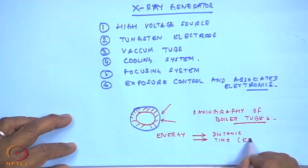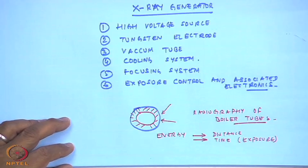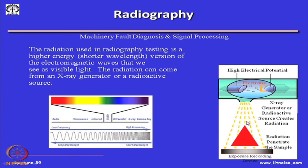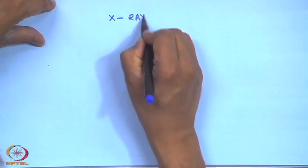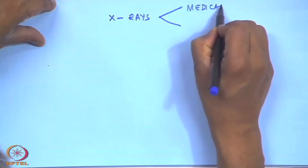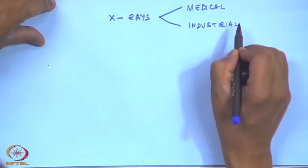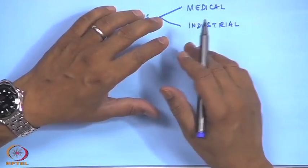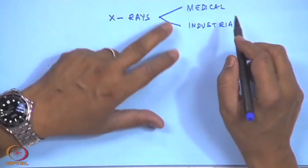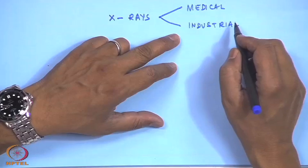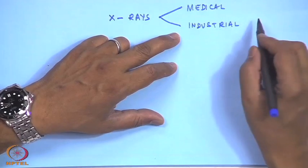Medical x-rays are used to find whether bones are intact or there is a fracture. The energy of medical x-rays is less because the density of bones or human flesh is much less than the density of industrial materials like steel, aluminum, and copper. Industrial x-rays are of higher energy. If an industrial x-ray is exposed to a human being, the cells may get damaged permanently. One has to be very careful, because even during medical x-rays the operator takes care not to be unknowingly exposed.